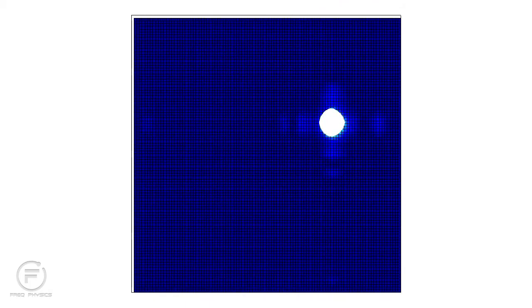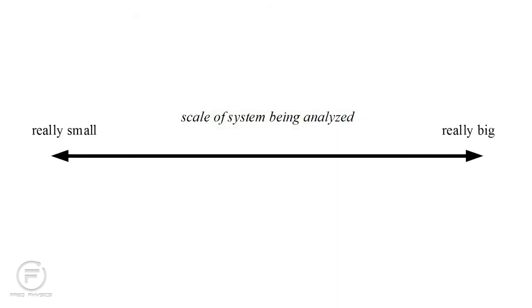So quantum mechanics and classical mechanics are not two disjointed, unrelated theories. Instead they represent two ends of a continuum. If the scale of a system being analyzed is really big, then quantum and classical mechanics give the same predictions. In this case there's no need for the extra complexity of quantum mechanics, and we can think of this as a purely classical realm. On the other hand, if the scale is really small, then wave-particle duality becomes important, and classical mechanics fails to accurately describe our observations. This is the purely quantum realm where Schrödinger's equation reigns supreme. The uncertainty principle is what delineates these extremes.